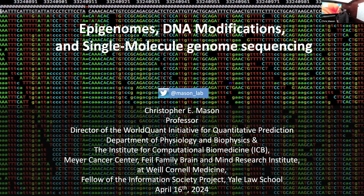IGV will come into some of the later homeworks. IGV is the Integrated Genome Viewer, a free package built off the Broad, which lets you take BAM files and references and zoom in and out of data. In most genomics papers, when you think you see a mutation, one of the best ways to clarify if it's real is to look at the alignments and zoom in to where you see it in the genome and ask, does that look real?